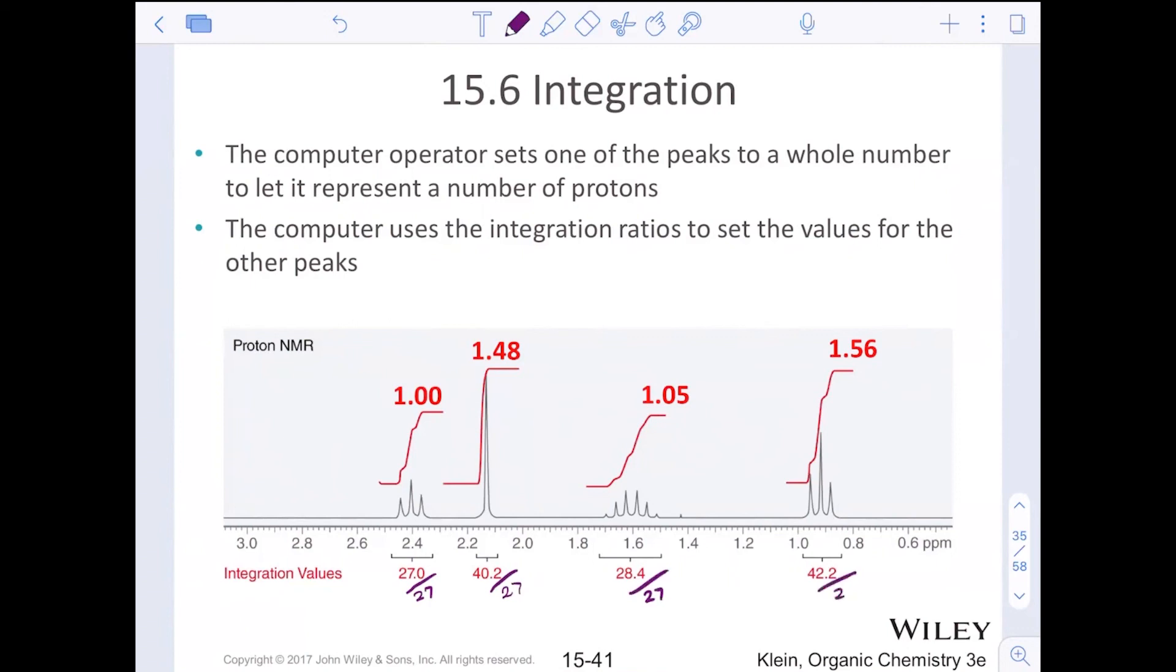They give integration values, typically at the bottom of the spectrum. If you have a really cool computer, you can set that computer to make the peaks into whole numbers. How do we do that? We usually divide by the smallest. So you take all of them and divide by 27 here. And you try to make them whole number ratios. We cannot have 1.48 protons being represented in a signal. So then what the computer does after it sets the values for the other peaks by dividing by the smallest, it will take and make those into more whole numbers. 2, 3, 2, and 3 by multiplying by some factor to make them whole numbers. Here, the factor would be multiplying everything by 2.